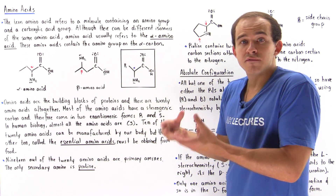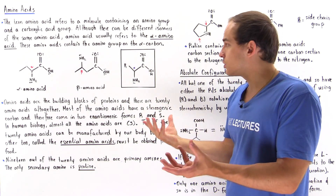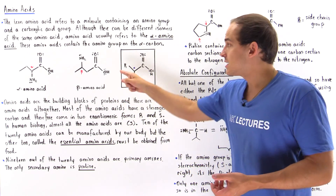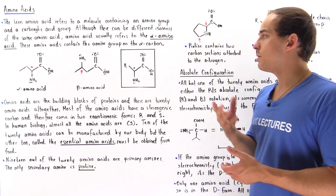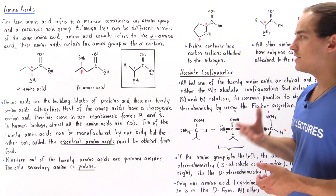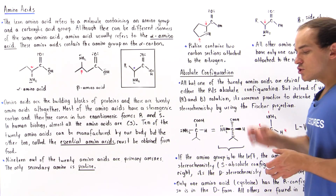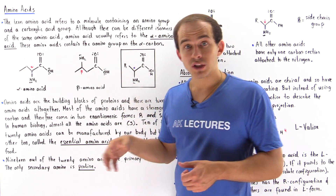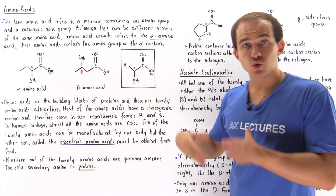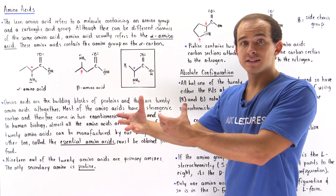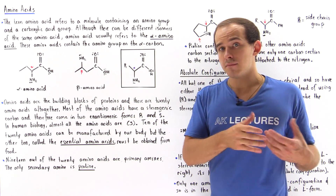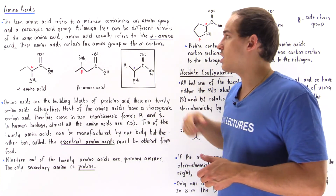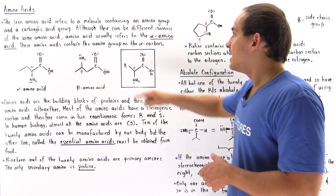R could be any type of atom or molecule — for example, the simplest type of R group is the H atom. What defines an amino acid, and what differentiates one amino acid from another, is essentially this side chain R group.